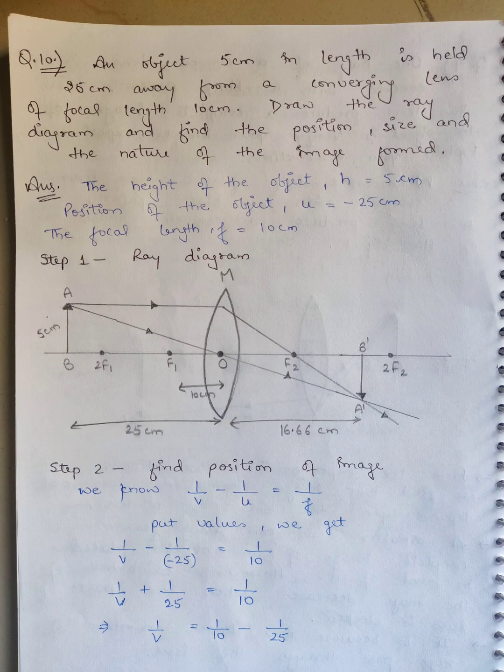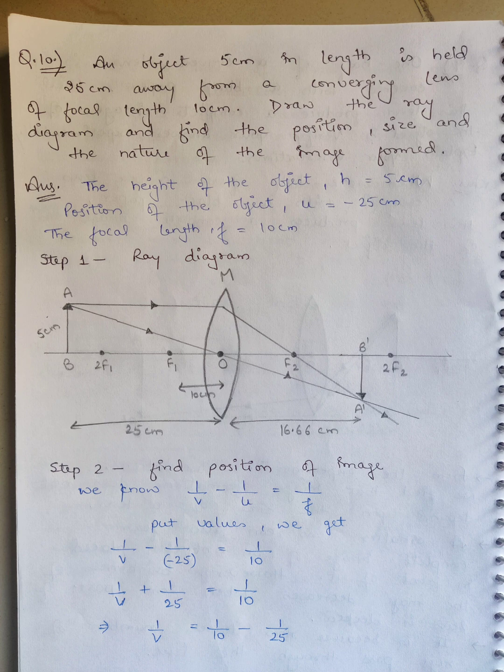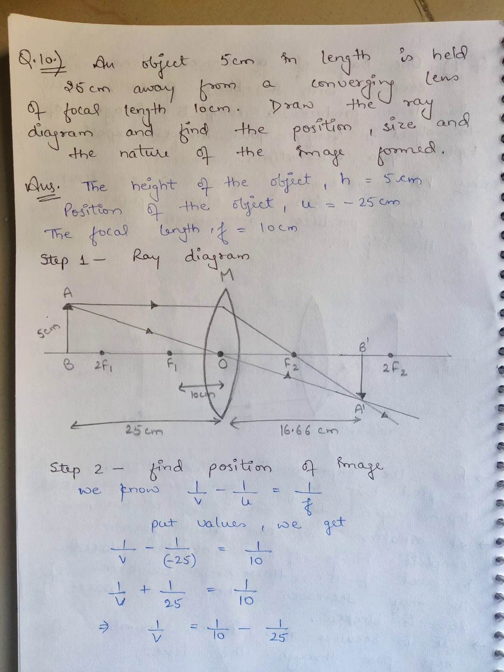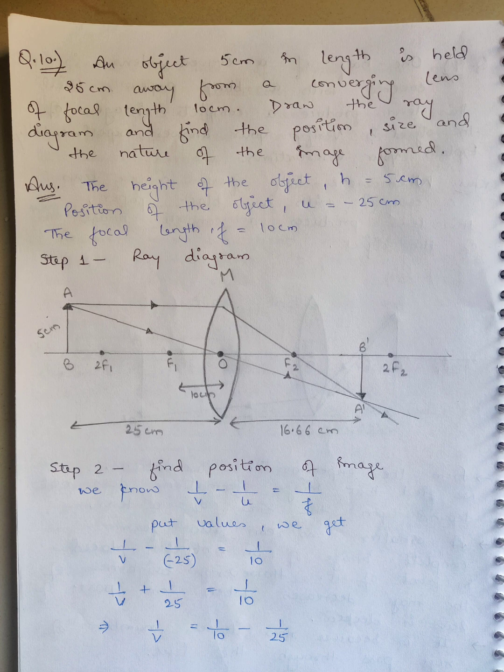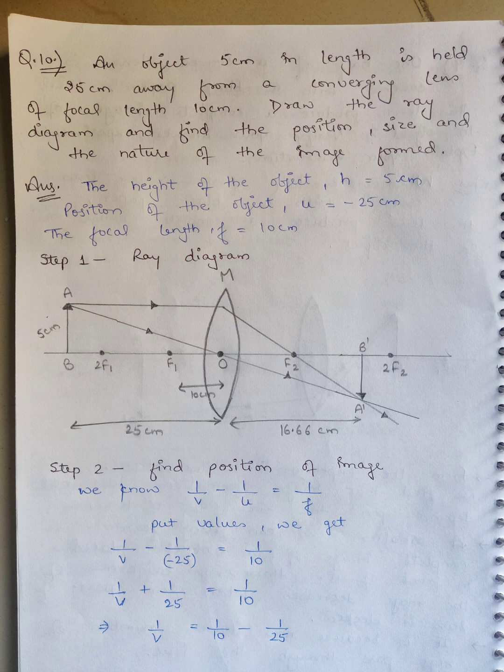Now question number 10, which is numerical. These are NCERT Chapter 1 Light physics questions for 10th class science. An object 5 cm in length is held 25 cm away from a converging lens of focal length 10 cm. Here we have height of object h = 5 cm, position of object u = -25 cm, and focal length f = 10 cm. The object is held 25 cm away from the lens, so u will be negative.